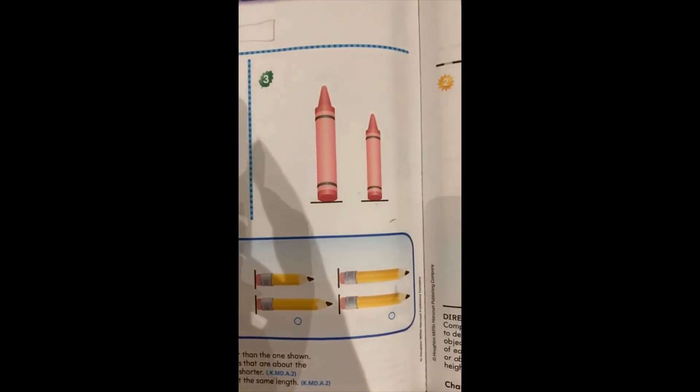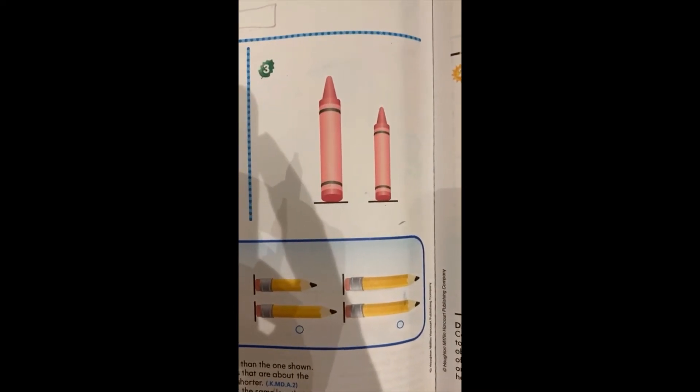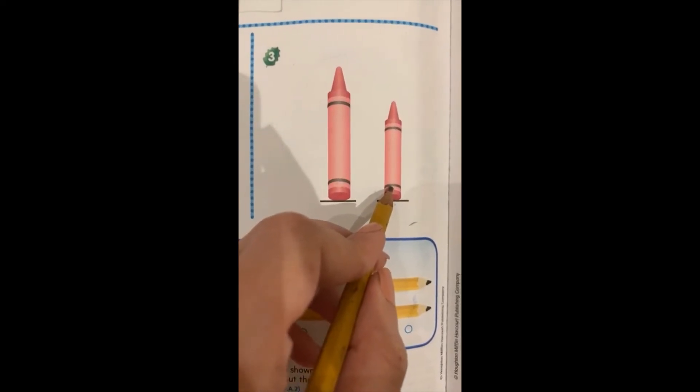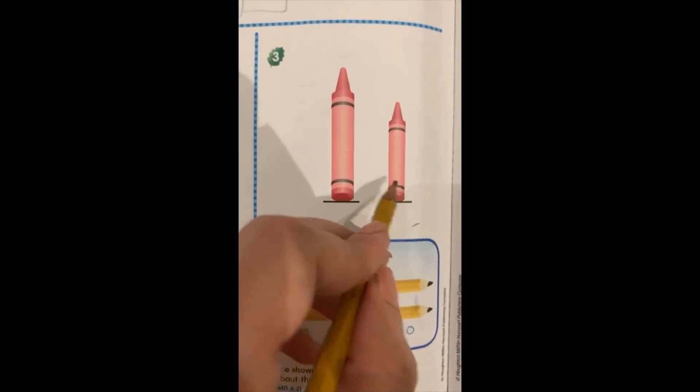Look at exercise three. Which crayon is shorter? Excellent! This one on the right is shorter than this one.